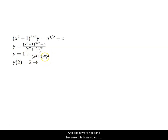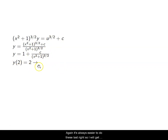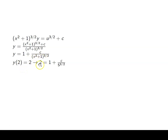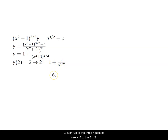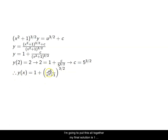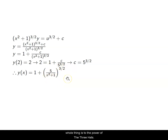We're not done because this is an IVP. I plug in the initial condition to find C. Substituting the initial values: 2 squared is 4 plus 1 is 5, giving 1 = C / 5^(3/2), so C = 5^(3/2). My final solution is Y = 1 + 5^(3/2) / (X² + 1)^(3/2), which since they share a common power can be written as 1 + (5/(X²+1))^(3/2). And that's how we apply the integrating factor method — all problems follow the same process.